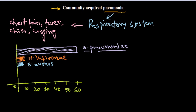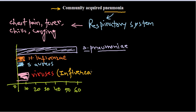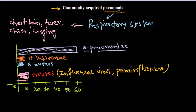Another important group of causative agents accounts for over 10 to 12 percent and consists of viruses. There are majorly two types: influenza virus and parainfluenza virus. Both of these viruses can cause this kind of pneumonia and its associated symptoms.